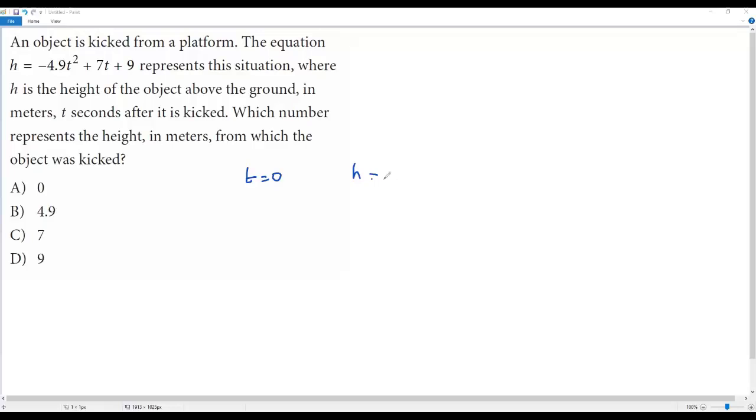When I plug in t = 0 into the given equation, h = -4.9(0)² + 7(0) + 9. So 0 squared is 0, when multiplied by anything everything will become 0. 7 times 0 is 0 plus 9, so I'm getting h = 9.